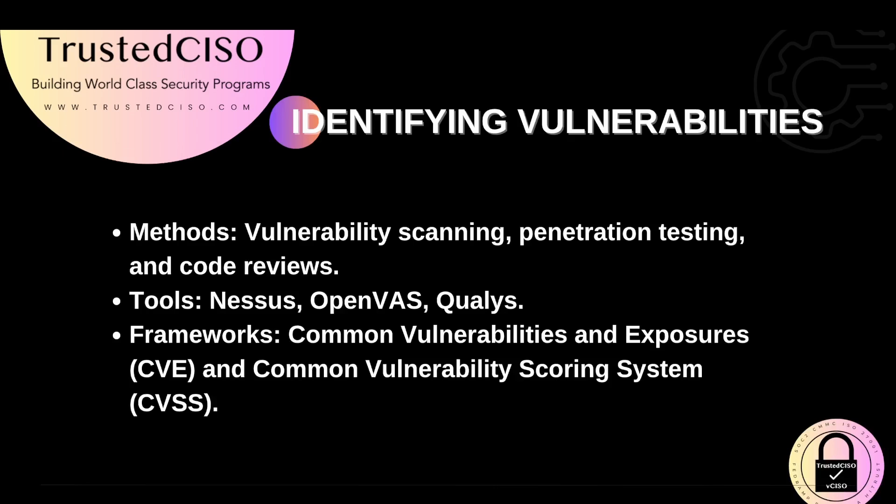Identifying vulnerabilities involves various methods such as vulnerability scanning, penetration testing, and code reviews. Tools like Nessus, OpenVAS, and Qualys are widely used for vulnerability scanning. Frameworks like the Common Vulnerabilities and Exposures, CVE, and the Common Vulnerability Scoring System, CVSS, help in identifying and categorizing vulnerabilities.